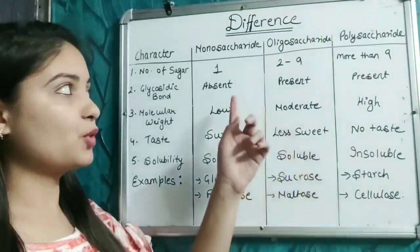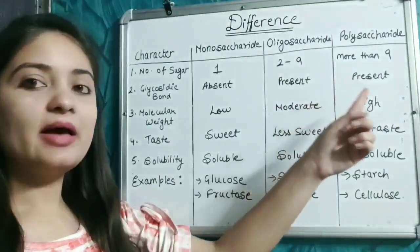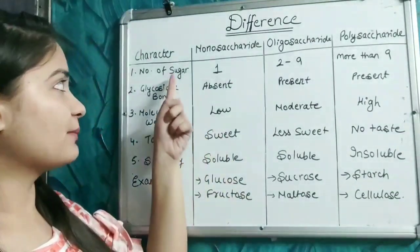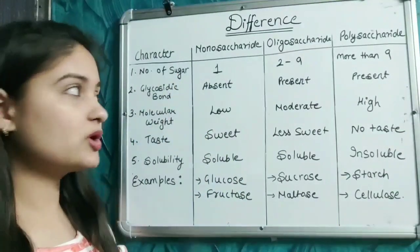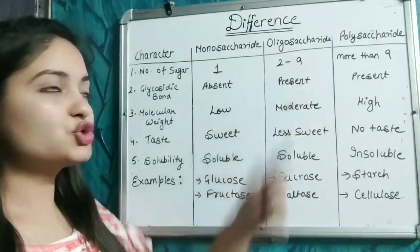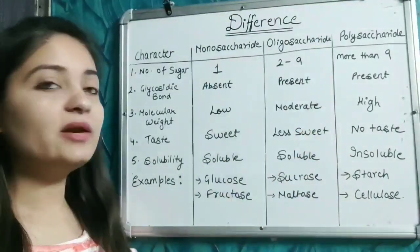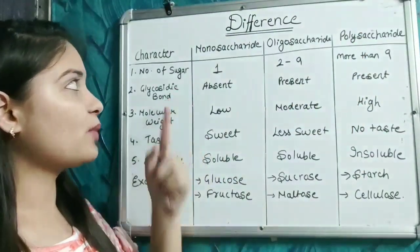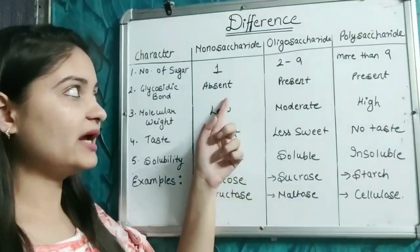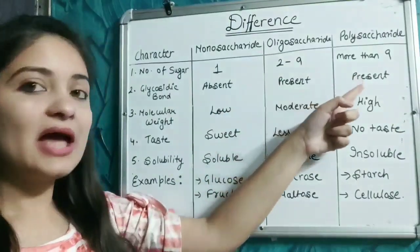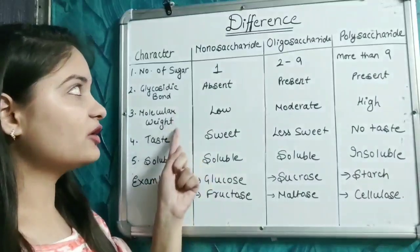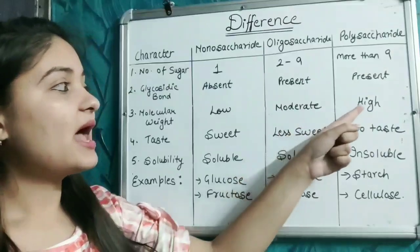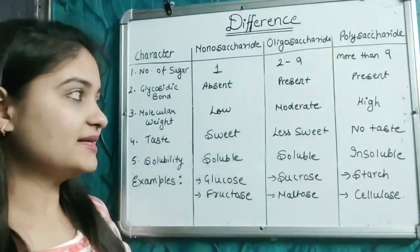Now let's discuss the differences between monosaccharides, oligosaccharides, and polysaccharides. In terms of number of sugars: monosaccharides have one sugar unit, oligosaccharides have two to nine sugar moieties, and polysaccharides have more than nine. Glycosidic bonds are absent in monosaccharides but present in both oligosaccharides and polysaccharides. Molecular weight is low in monosaccharides, moderate in oligosaccharides, and high in polysaccharides.